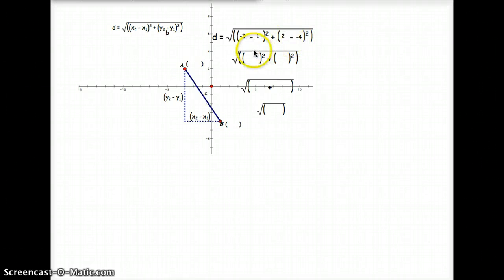So then I have negative 3 minus 1 is negative 4 squared. Here I have 2 plus 4 is 6 squared. So 4 squared is 16.